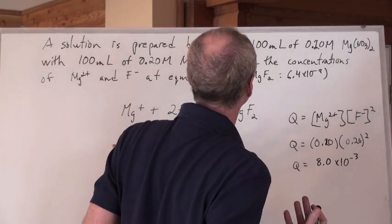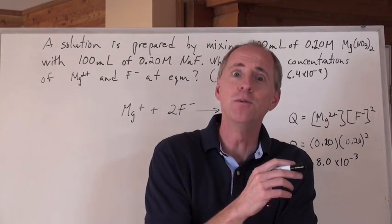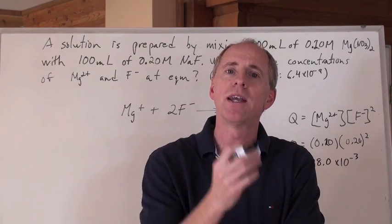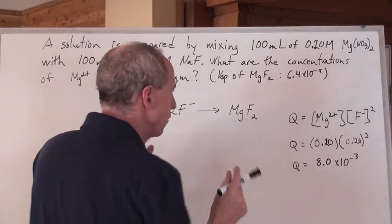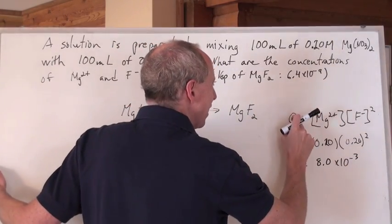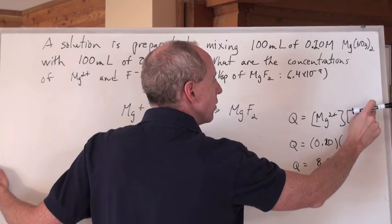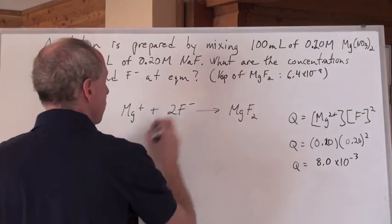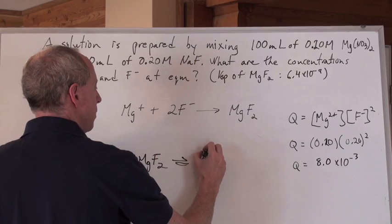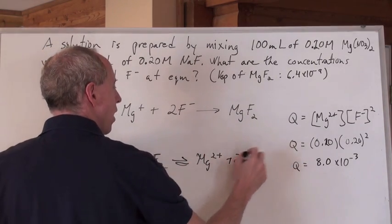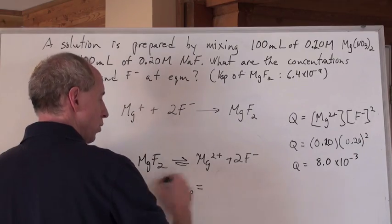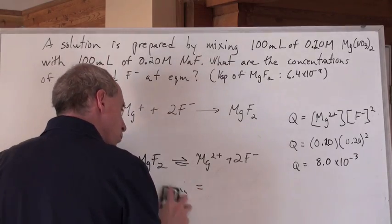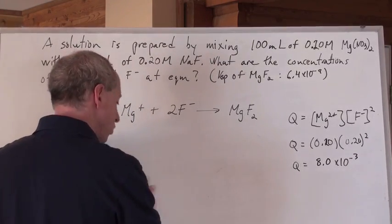To tell if you've got a precipitate, since you have a K value, you calculate Q. The expression is: Q = [Mg²⁺][F⁻]². This comes from the equilibrium MgF₂ ⇌ Mg²⁺ + 2F⁻, where Ksp = [Mg²⁺][F⁻]². We plug in concentrations that might not be at equilibrium to get Q.